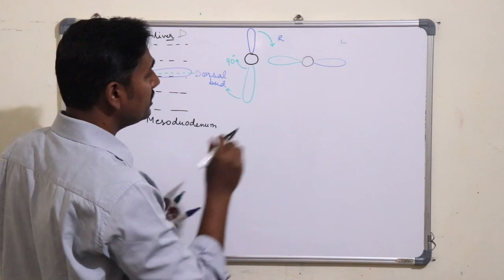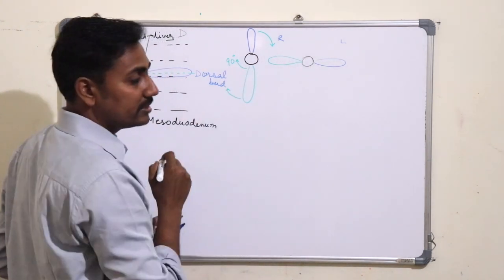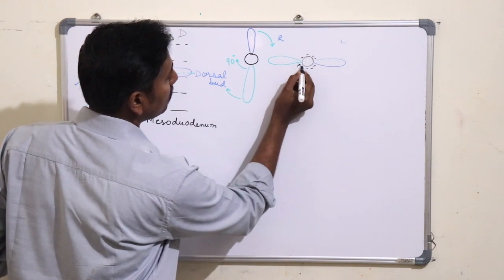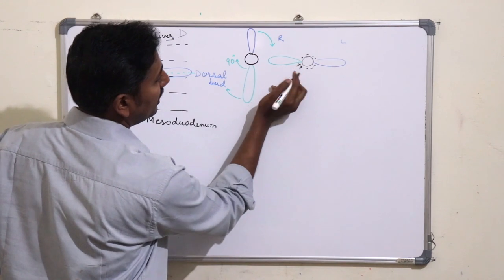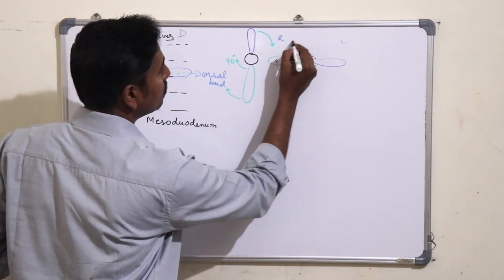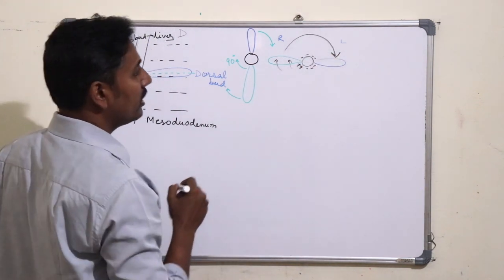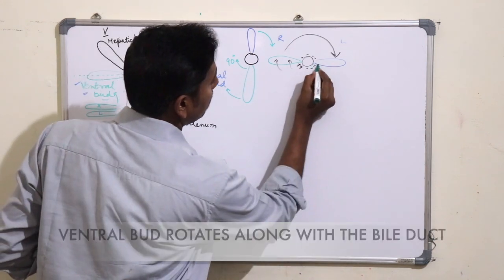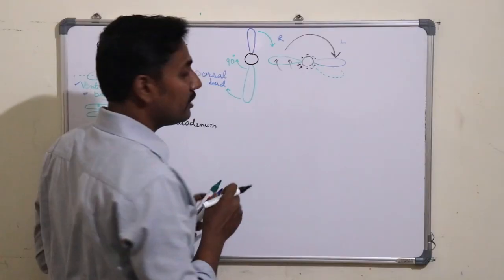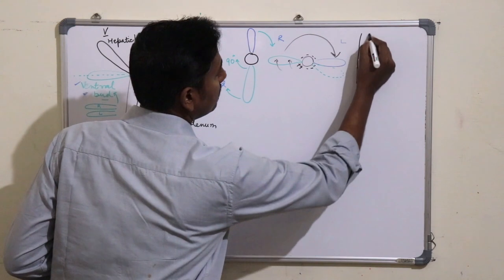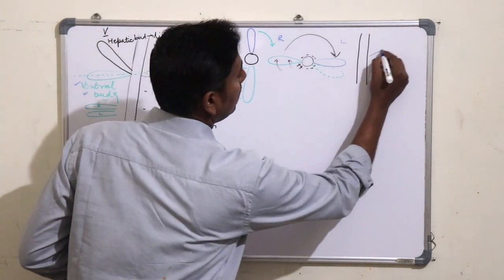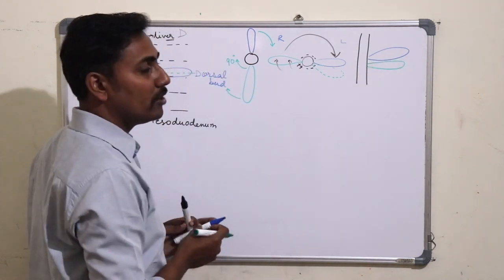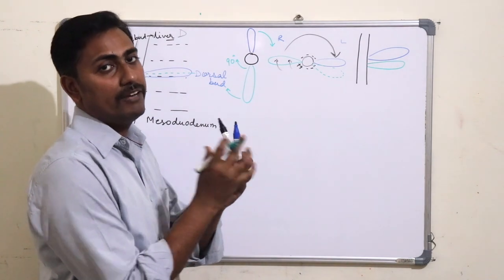During further development, there is differential growth in the dorsal bud — in one portion there will be more growth compared to other regions. Due to this greater growth, there will be expansion of that area, and this will push the ventral bud backwards towards the dorsal bud. Therefore, the ventral bud will rotate towards the dorsal bud and come to lie below the dorsal bud on the left side. These two buds will form the pancreatic tissue, fuse together as one mass, and form the pancreas.